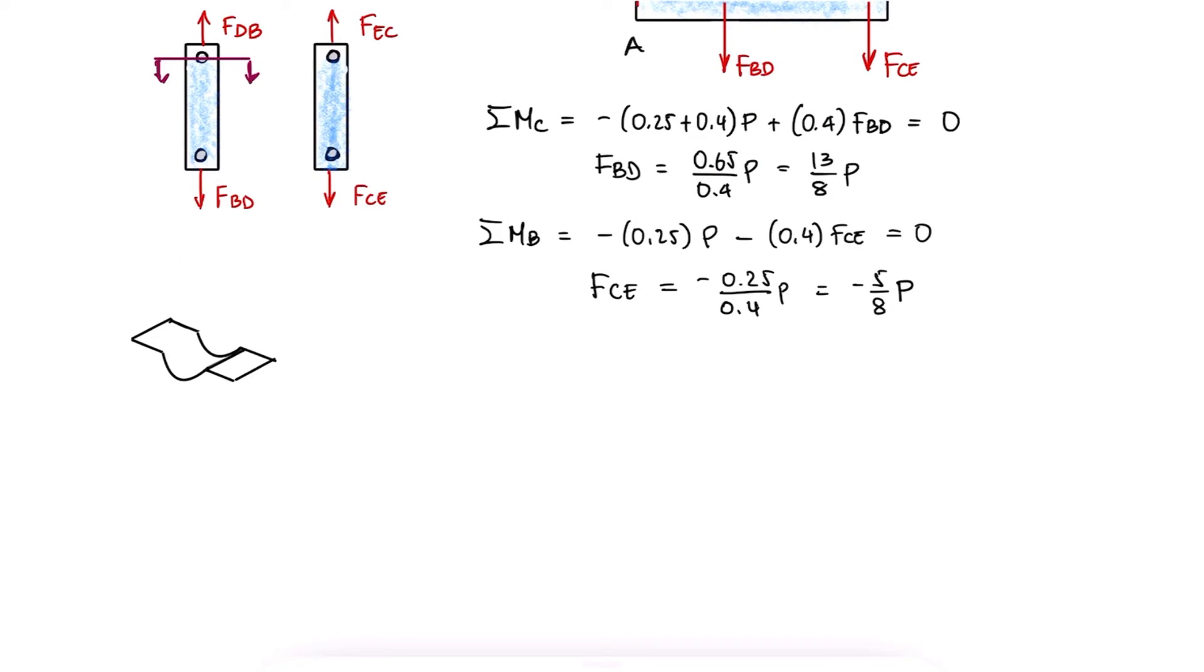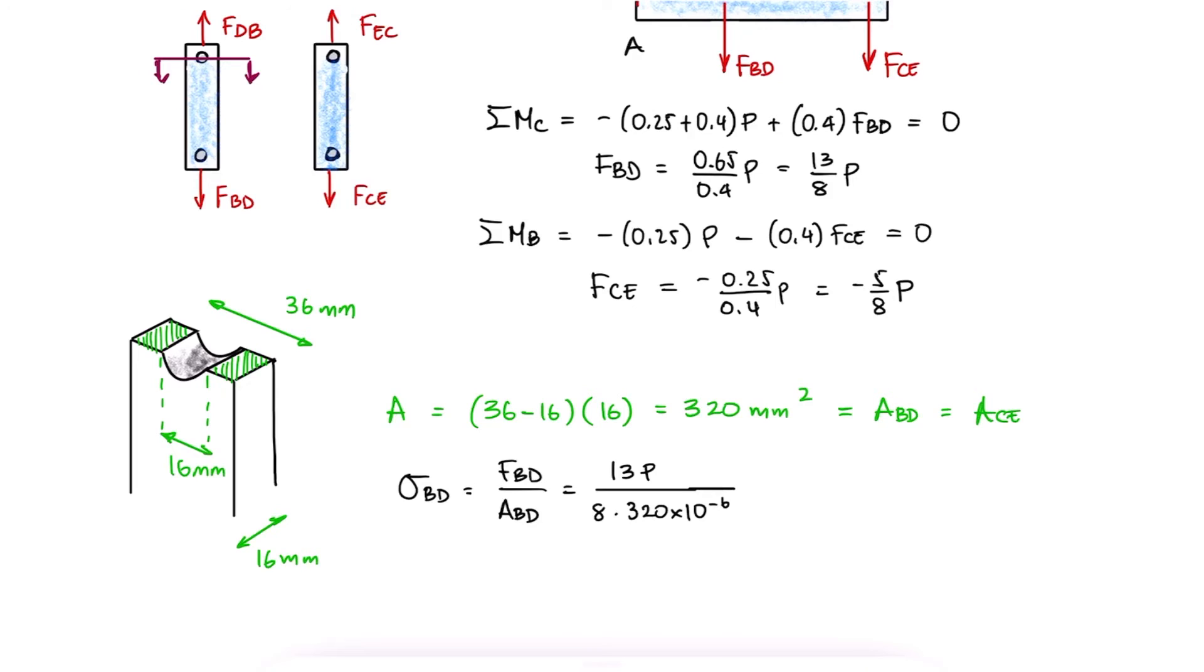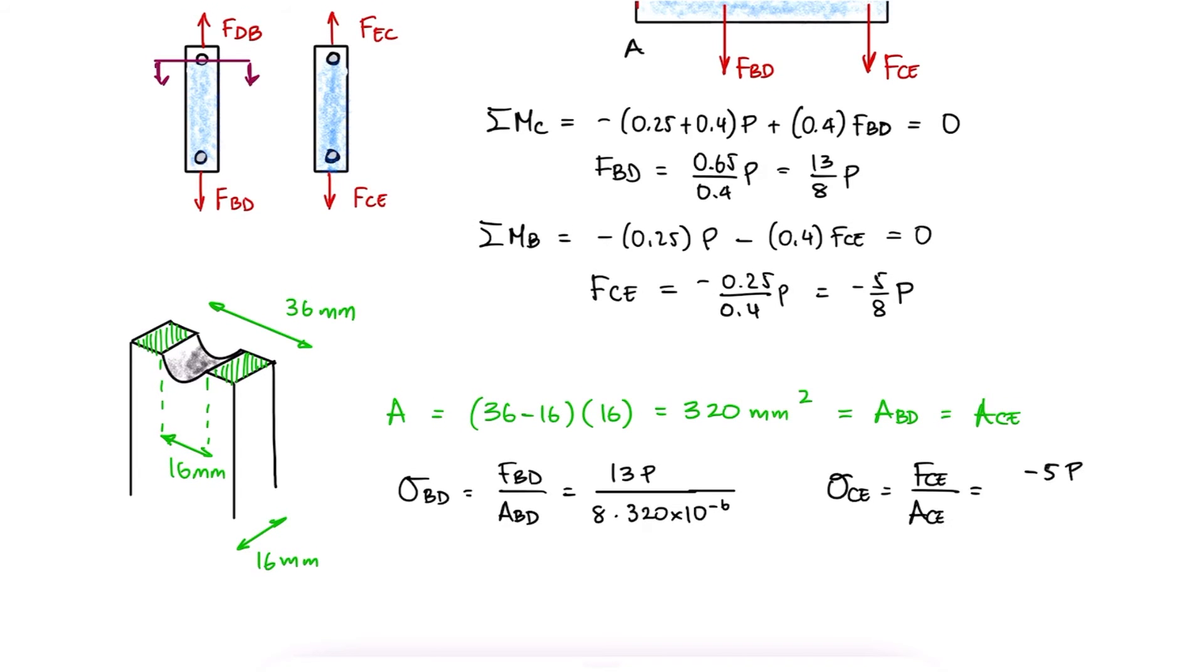With the value of the smallest cross-section area of the link, which is at the pin, which is the same for both links, we see that link BD is subjected to tension and link CE is subjected to compression.